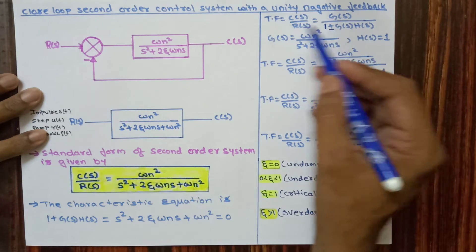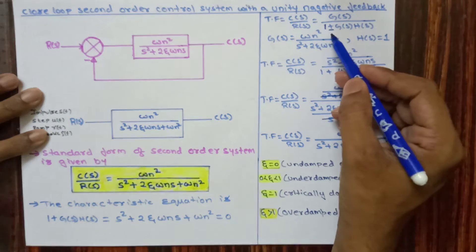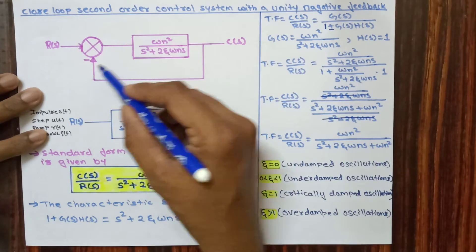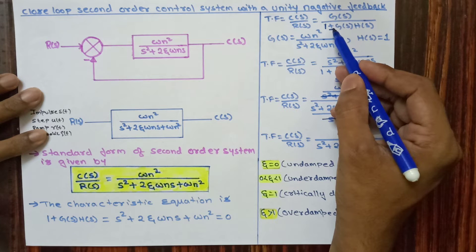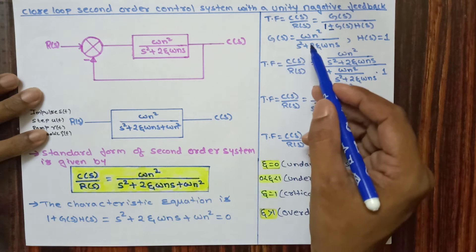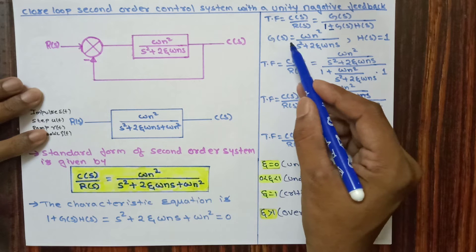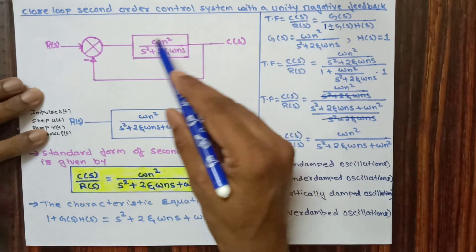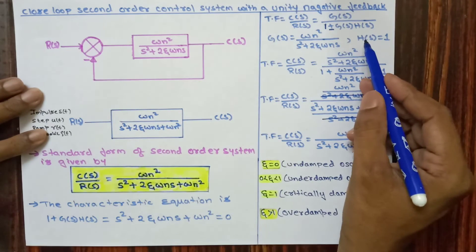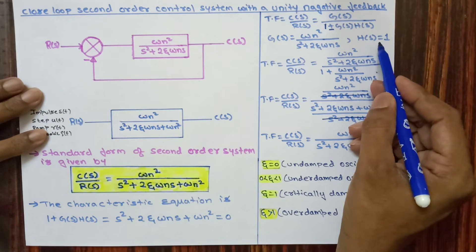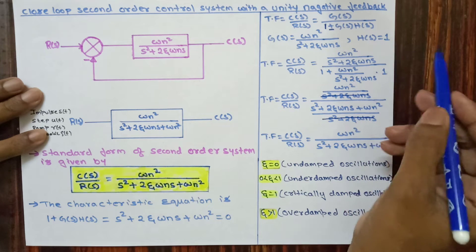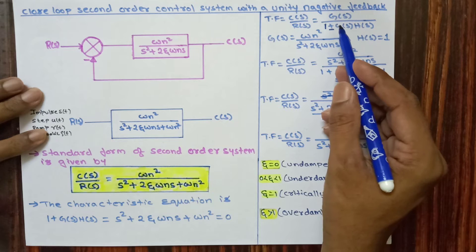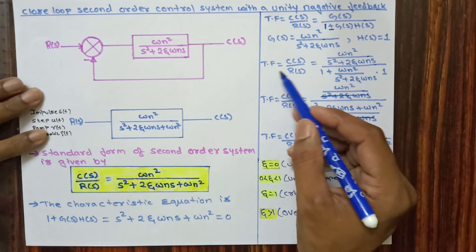If negative feedback, we consider the positive sign; if positive feedback, we consider the negative sign. Since we are using negative feedback here, we use the positive sign. G(s) = omega_n squared divided by (s squared + 2*zeta*omega_n*s), and H(s) = 1 for unity feedback. We substitute G(s) and H(s) values into the transfer function formula.